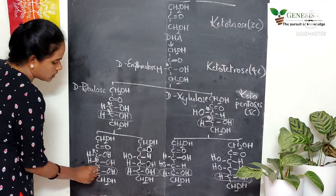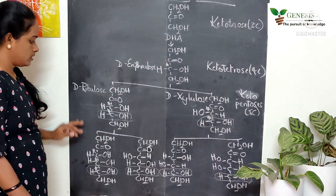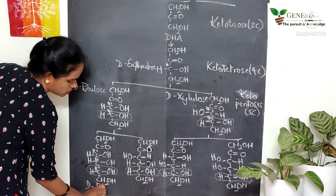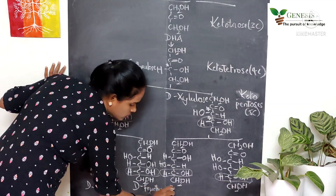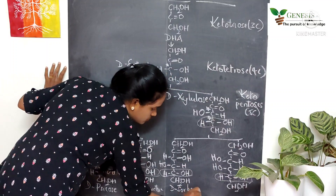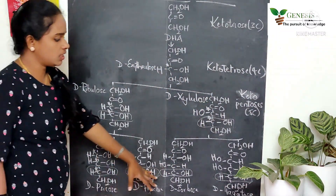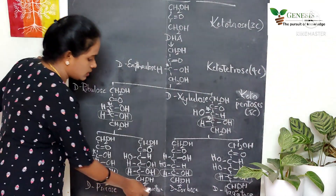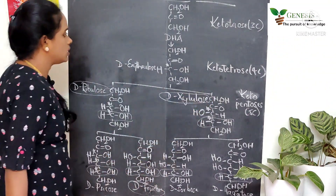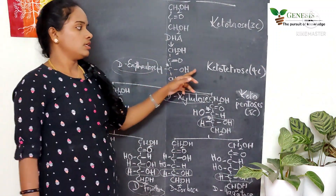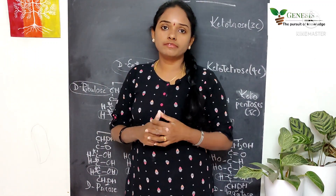Ketohexoses contain three chiral centers, while aldohexoses contain four chiral centers. The names of the ketohexoses are D-psicose, D-fructose, D-sorbose, and D-tagatose. D-fructose is the most prominent ketohexose. D-ribulose and D-xylulose are the most prominent ketopentoses, and D-erythrulose is the most prominent ketotetrose. These are all the open chain structures of monosaccharides written using Fischer projection formula.